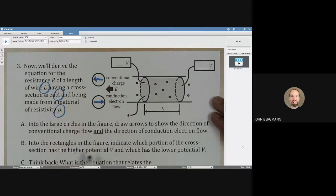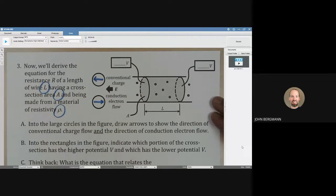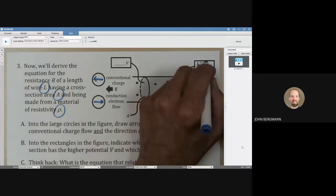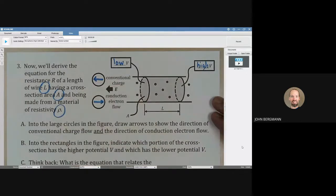Into the rectangles, indicate which portion of the cross-section has the higher potential V and which has the lower potential. The electric field goes from higher potential towards lower potential. That is the direction it points.